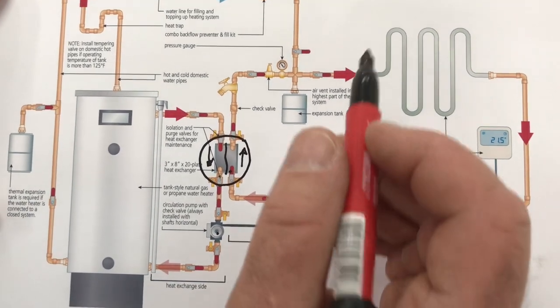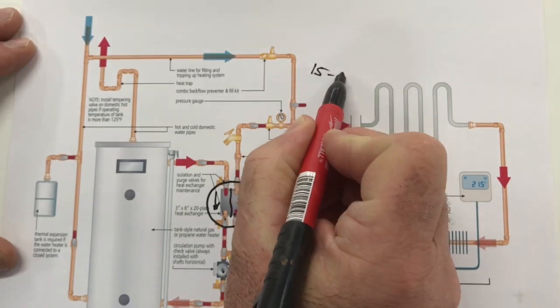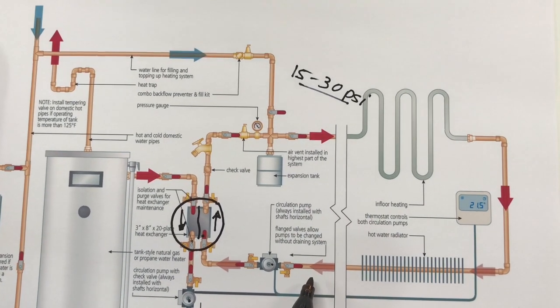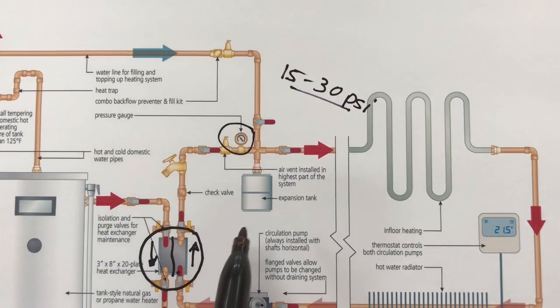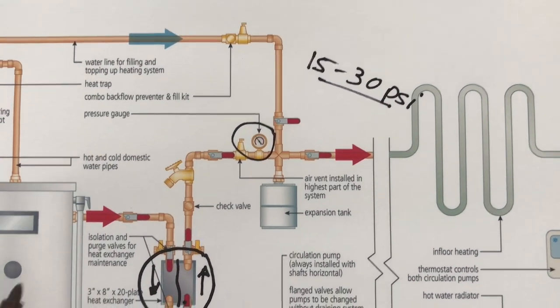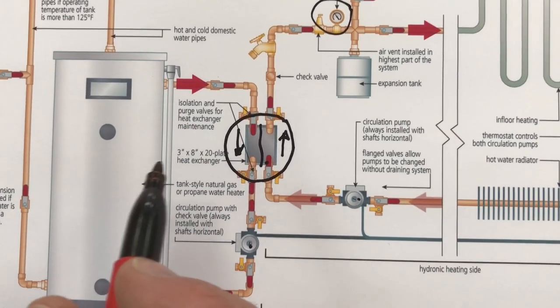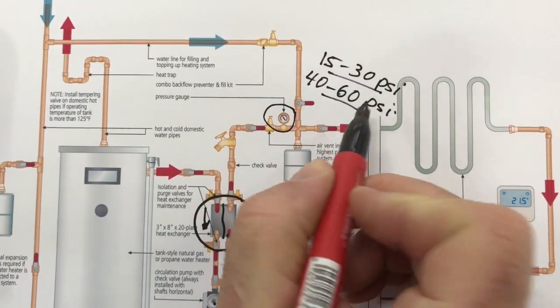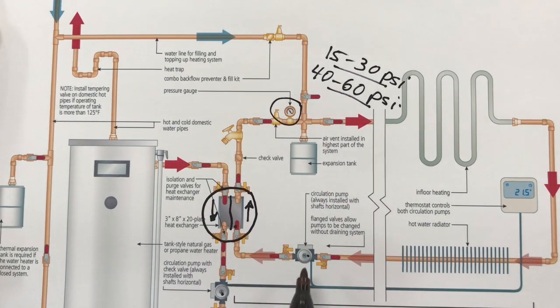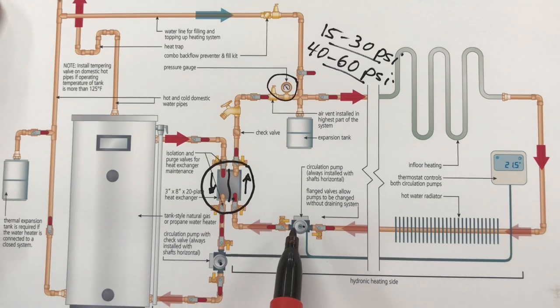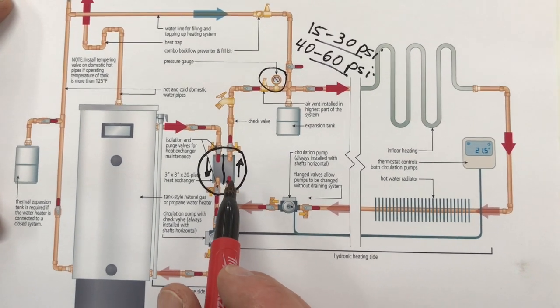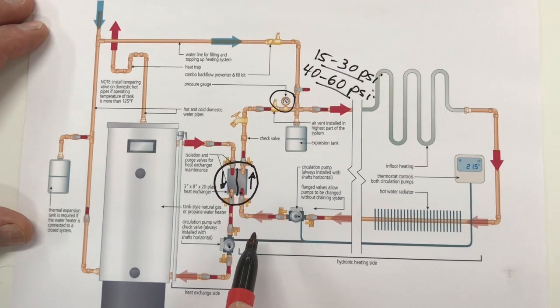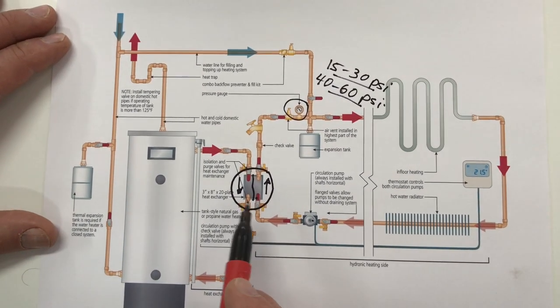Now typically the optimal pressure is anywhere from 15 to 30 psi, that's pressure of the hydronic system. If you have a system that's directly connected to the water tank then you're looking at anywhere from maybe 40 to 60 psi, that's typical municipal water pressure, and that's somewhat higher than it should be for maximum pump life. It's a minor advantage to the heat exchanger system but this is what you need to do if you can't have any exchange of the two sorts of water.